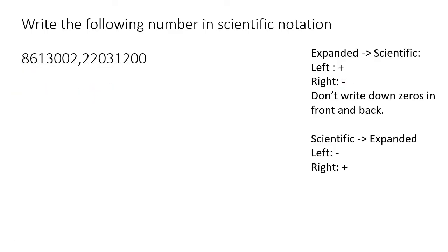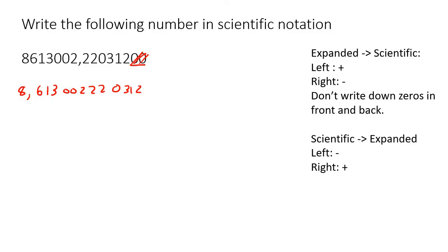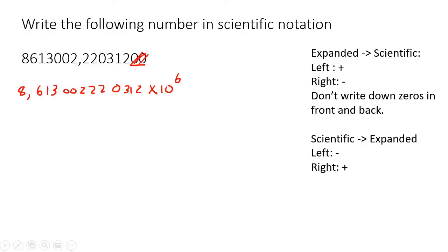Here's the next example — that's a big number! Any zeros in the front? No. Any zeros at the back? Yes — scratch them out. Write down the first number, which is 8, then all the other numbers: 3, 0, 0, 2, 2, 2, 0, 3, 1, 2 — don't write out the trailing zeros. Now look at the comma: it was originally after that 2, and we moved it to after the 8 — that's six places to the left. Left means positive, so times 10 to the power of 6.